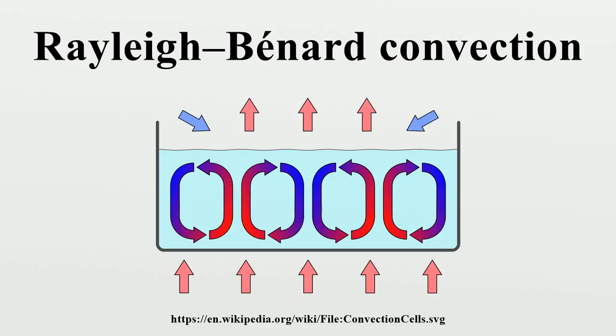The features of Rayleigh-Bénard convection can be obtained by a simple experiment first conducted by Henri Bénard, a French physicist, in 1900.